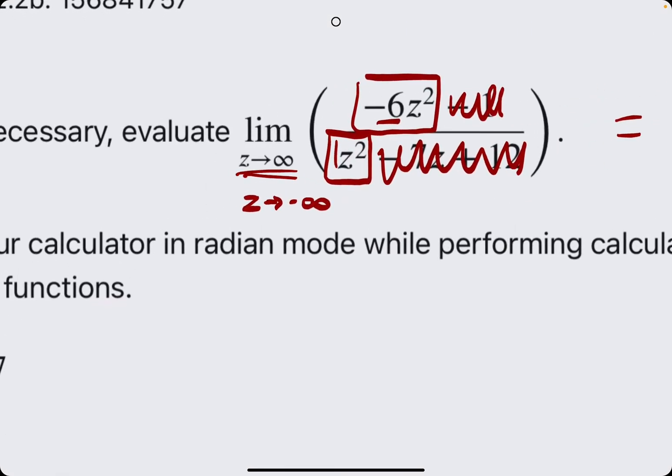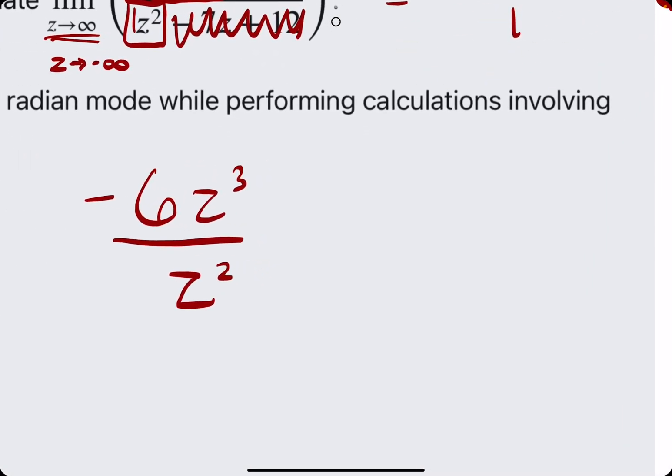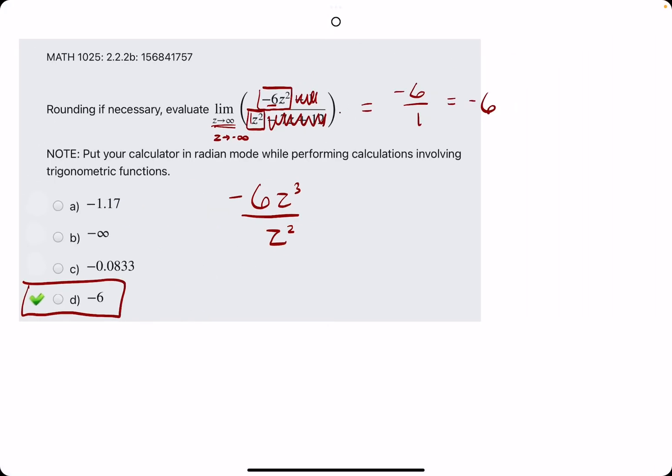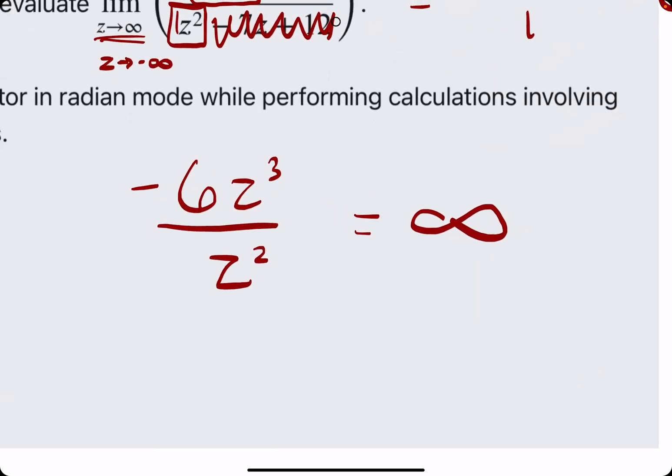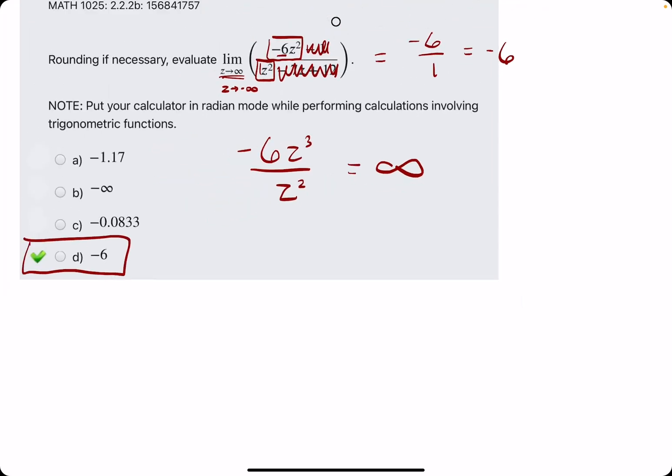So the other cases you could see are if the degree on top is larger. So if it's something like z cubed over z squared, this would go to infinity because if we plug in infinity to z, basically the numerator will increase to infinity at a much faster rate. So this is one example.